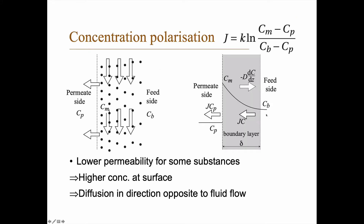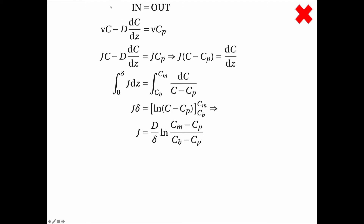Looking in the direction from the bulk towards the permeate, we have a velocity V — which is the same as J — times the concentration: that is the convection moving things towards the membrane. We also have diffusion going in the other direction, and this must equal V times C_p, which is what exits on the permeate side. Since V equals J, we substitute J in.